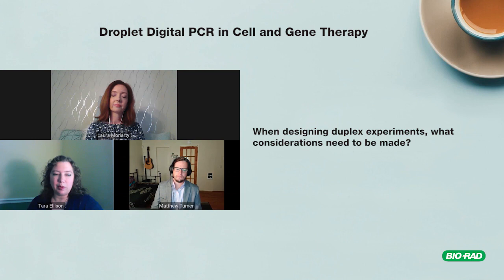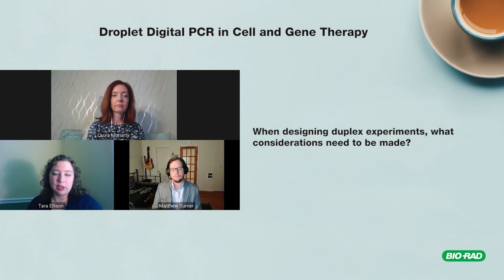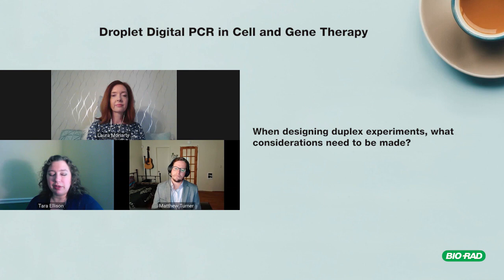Since ddPCR is an endpoint reaction, we don't measure every cycle like in qPCR — we wait until the end, make droplets, do PCR to endpoint, then read droplet fluorescence. Efficiency doesn't matter as much as long as it's good enough. Bio-Rad has a two-color instrument, the QX200 — channel one is FAM, channel two uses HEX or VIC. The newly launched QX1 can read four channels.